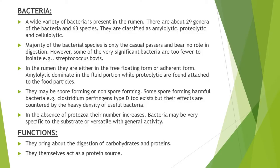A wide variety of bacteria is present in the rumen — there are about 29 genera and 63 species of bacteria found in the rumen. These bacterial species are classified as amylolytic, proteolytic and cellulolytic. The function of amylolytic bacteria is to act on starch. Concentrate-rich or forage-based diets are dominated by starch-degrading amylolytic bacteria or fibrolytic bacteria, which mainly degrade starch or fiber and produce a large amount of propionate or acetate.